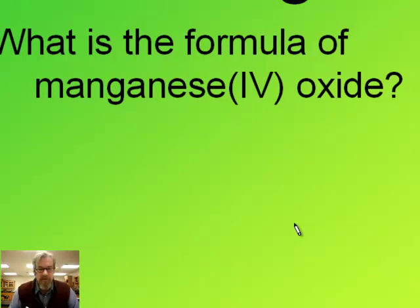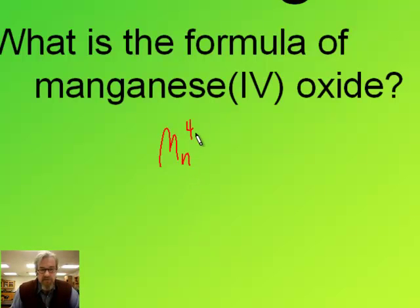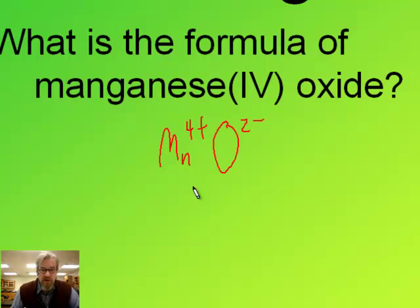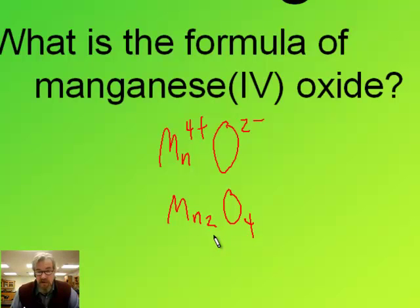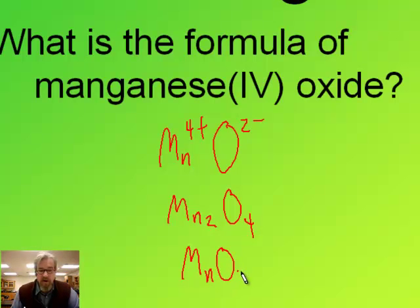Try this one: find the formula of manganese four oxide. The manganese has a four plus charge because the Roman numeral four indicates that. Oxide is an oxygen atom — as an ion, that's a two minus. So when I do a charge swap, Mn gets a two and O gets a four. Because this is an ionic compound, I reduce those subscripts to their lowest values — dividing both by two gives MnO2.